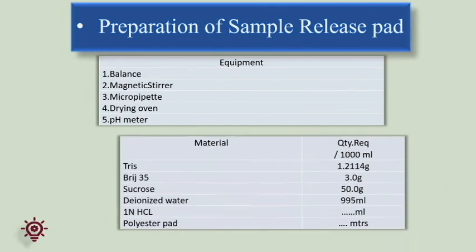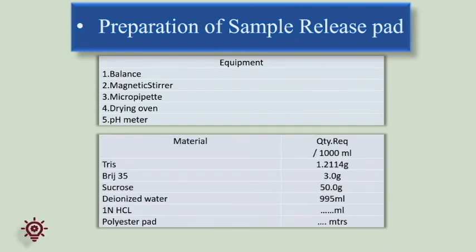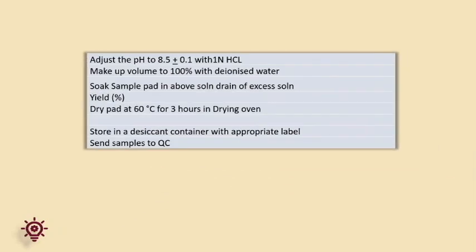Preparation of sample release pad: mix all ingredients stepwise and dissolve completely in 80% water. Adjust the pH to 8.5 plus or minus 0.01 with HCl. Make up the volume to 100% with deionized water. Soak the sample pad in the solution and drain off the excess solution. Calculate the percentage of yield and dry the pad at 60 degrees centigrade for 3 hours in a drying oven. Store in a desiccant container with appropriate labeling. Send the sample to QC for testing.